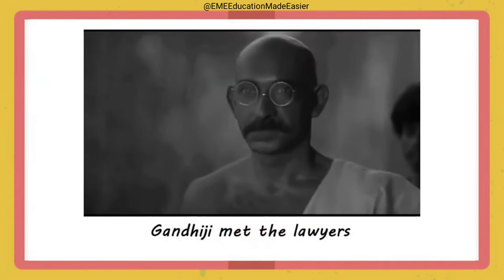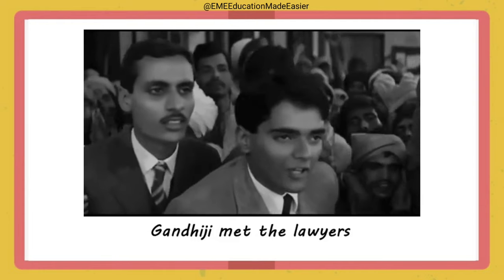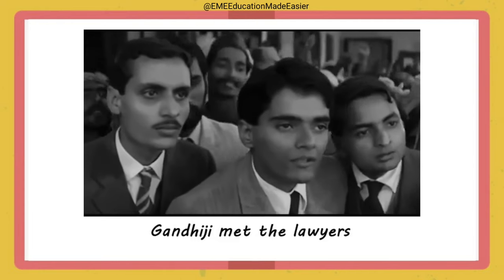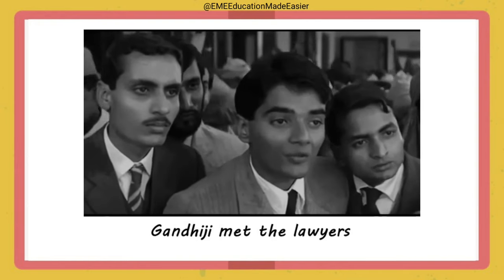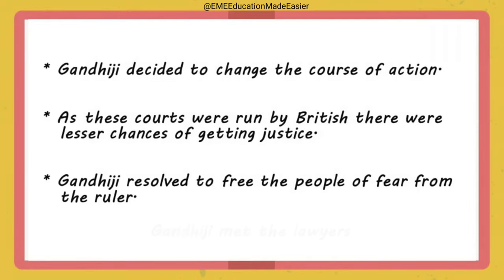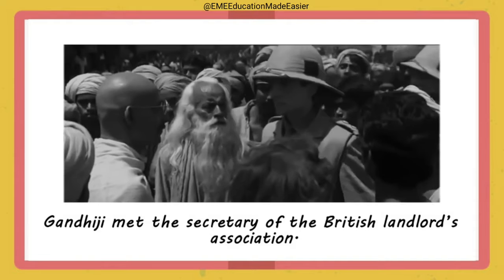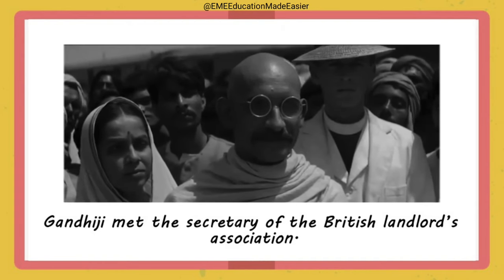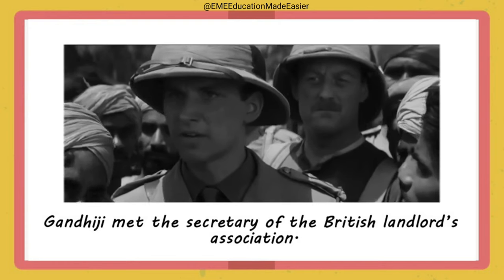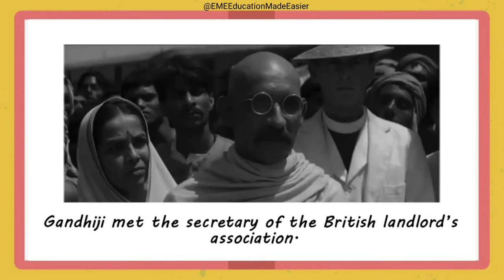Gandhiji tried to analyze the situation by talking to lawyers representing the peasants. He discovered that lawyers had been charging high fees from the peasants, and scolded them. He decided not to expect justice from law courts run by the British and resolved to free the people of fear from the ruler. Arriving in Champaran, he asked the secretary of the British Landlords Association for details, but was refused on grounds that he was an outsider. Gandhiji claimed this was his country. He then tried to contact the administrative officials of Tirhut, who declined any help and advised him to leave town at once.